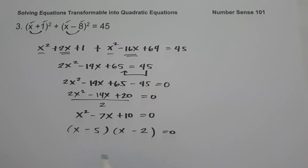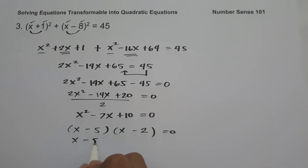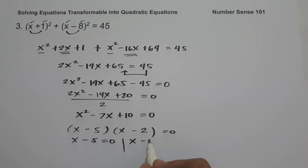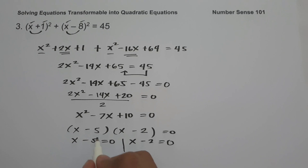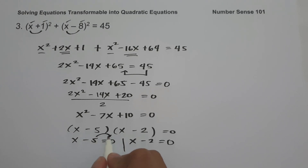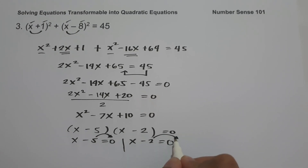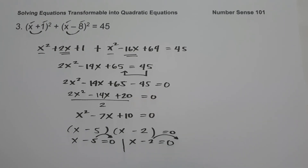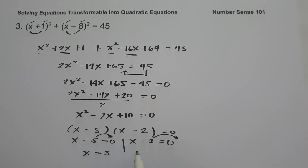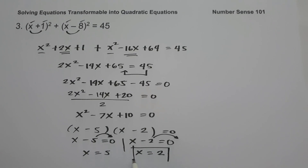Equating to zero: x minus 5 equals 0 and x minus 2 equals 0. Moving the constants to the other side gives x equals 5 and x equals 2. This will be our answer.